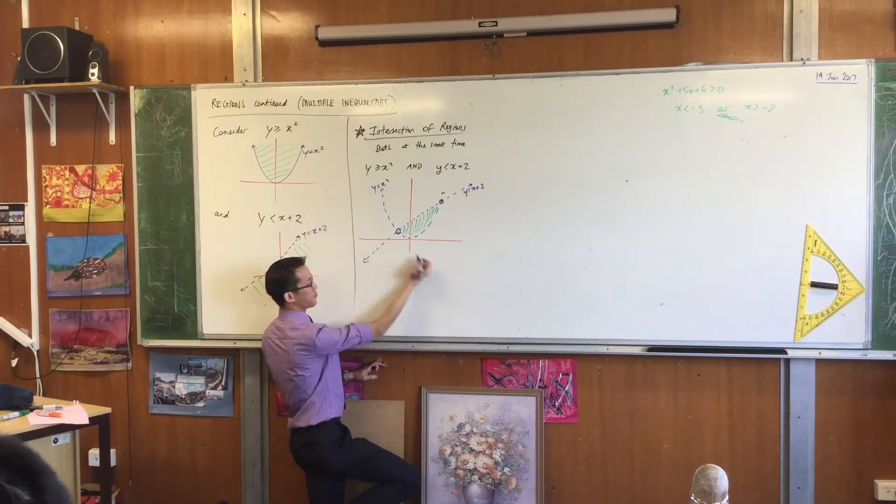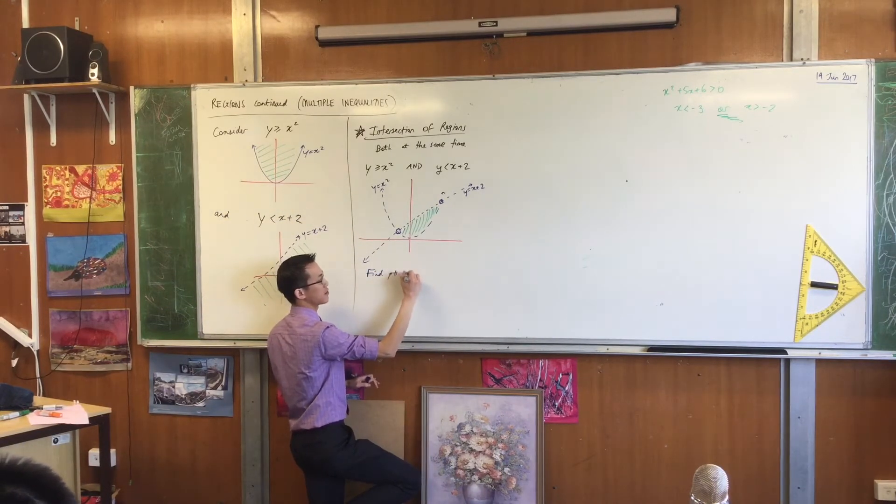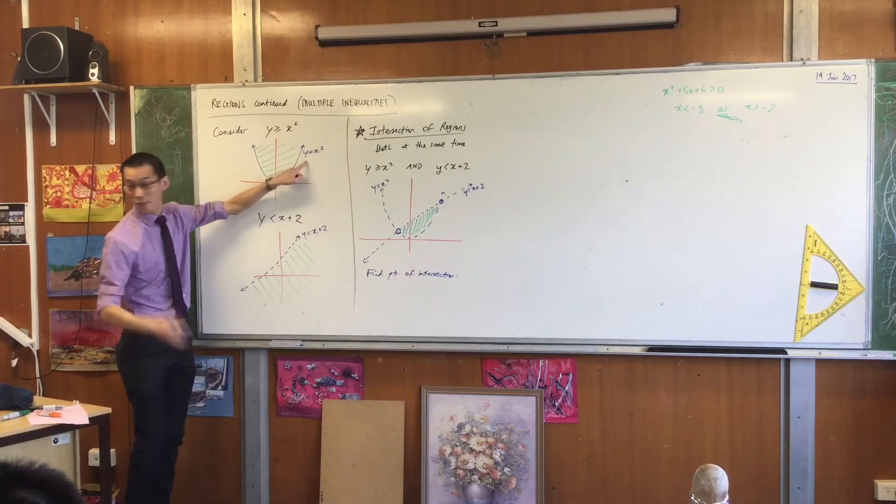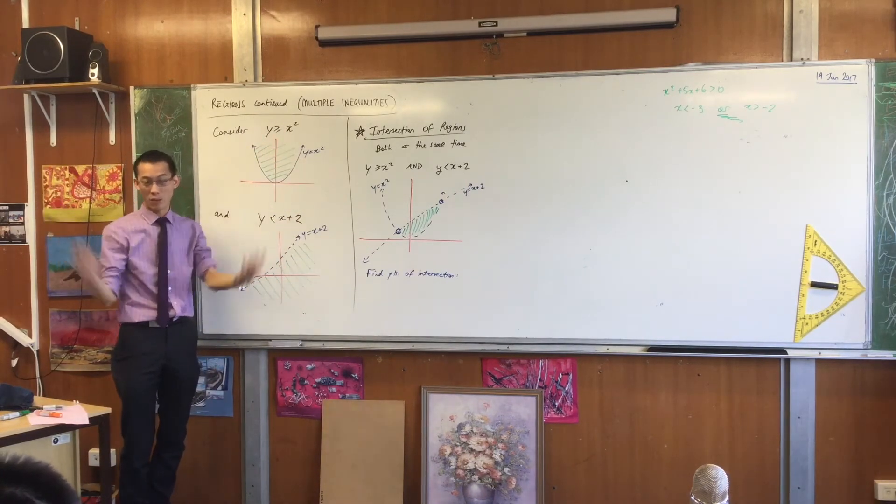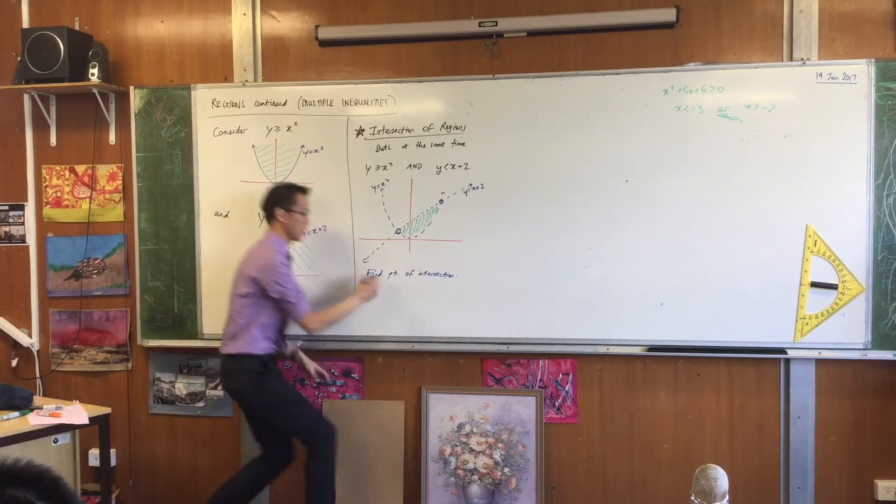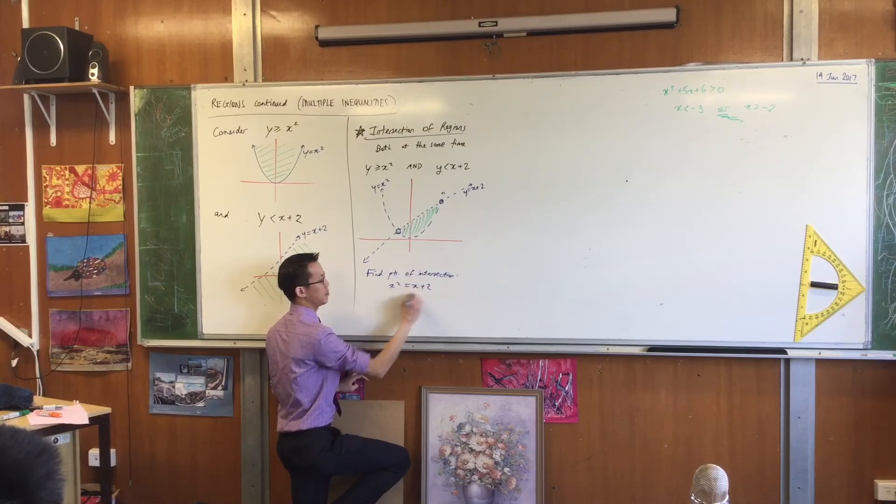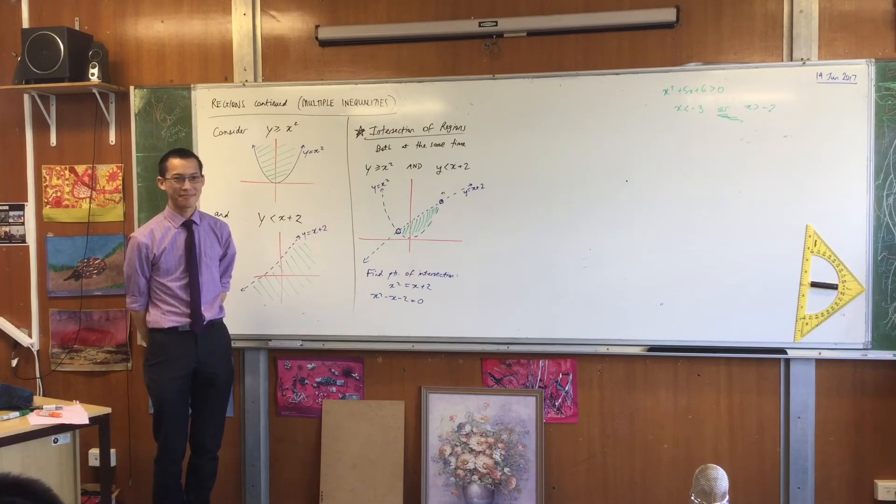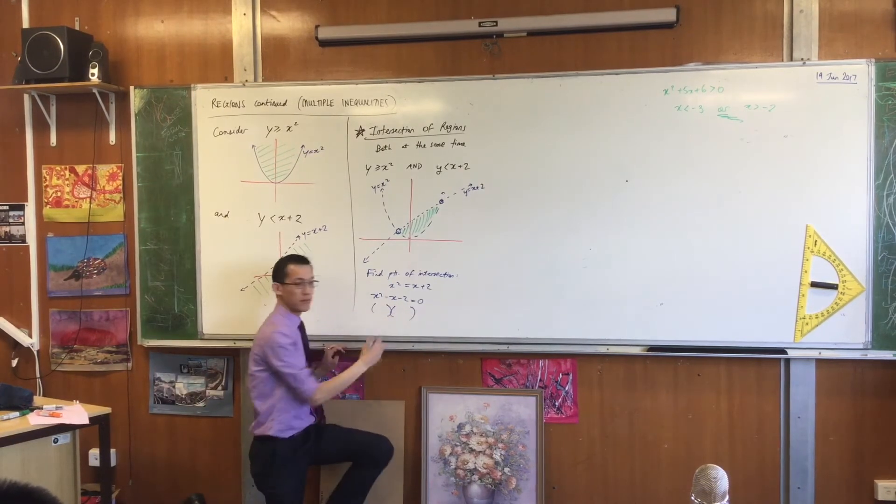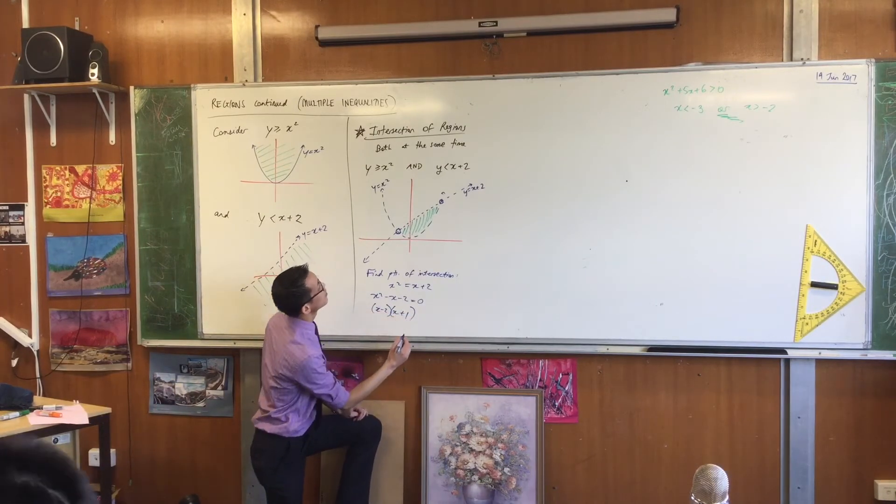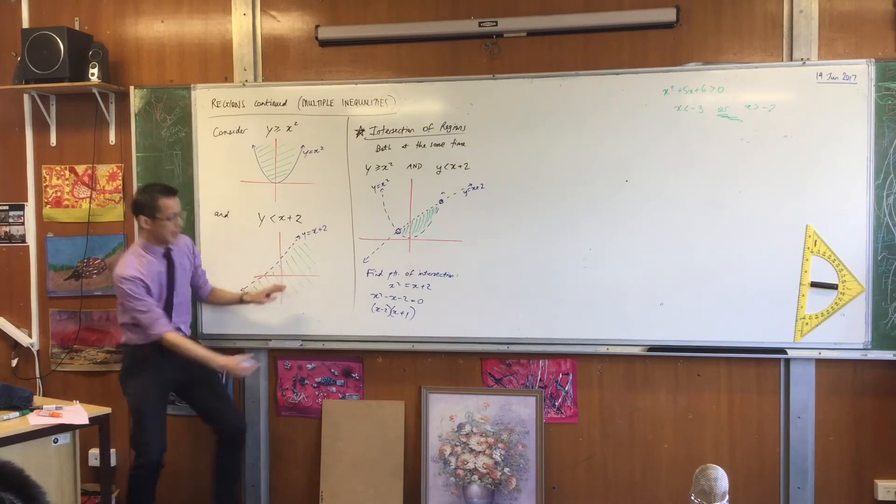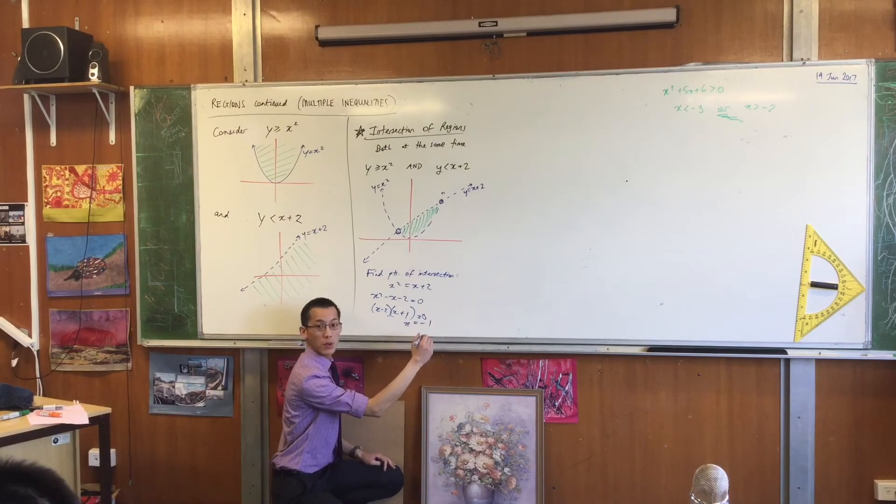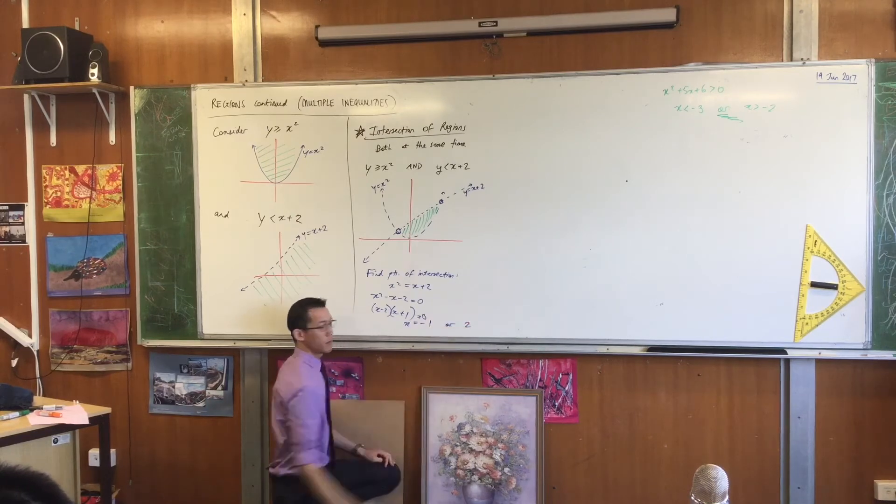So I'm going to conveniently, I've got both of them with y as a subject. So I can just get rid of the y's and say x squared will equal x plus 2. What would you like me to do with this? I can factorize this. What's the factorization? x minus 2, x plus 1. That's right. That's what I expected. So that's equal to 0. So what does that tell me? Negative 1 will be one of the solutions or x equals 2, positive 2.